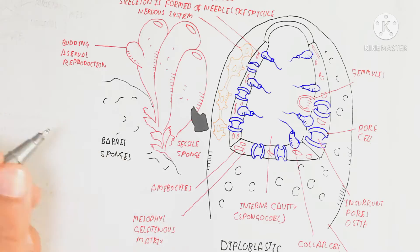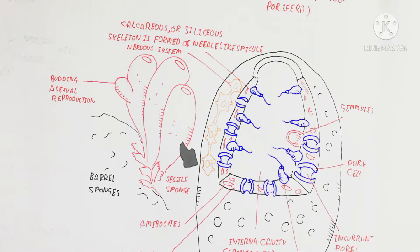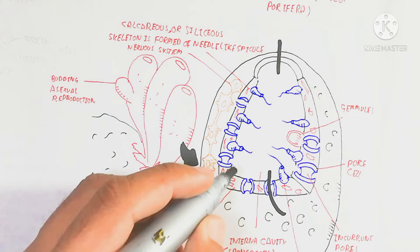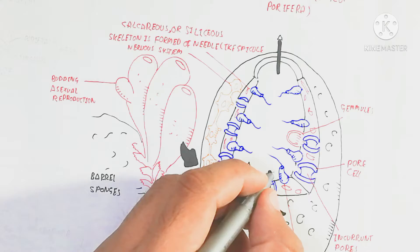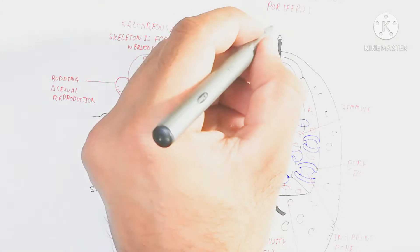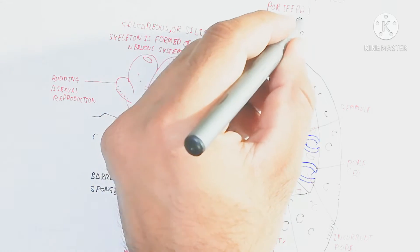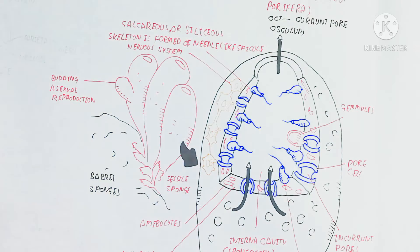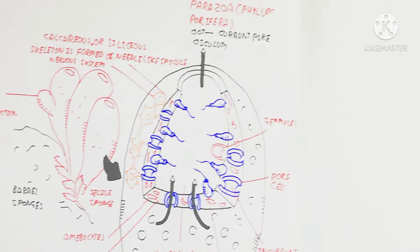To summarize the kingdom Animalia, phylum Porifera is the initial stage representing tissue-level organization. The osculum is used for the outgoing of water. We will now discuss the next phylum, Cnidaria.